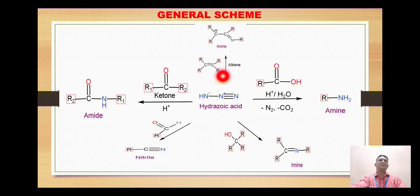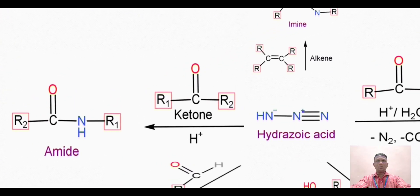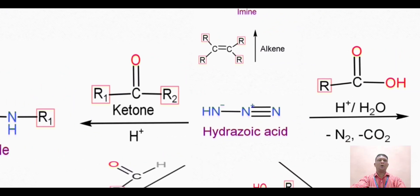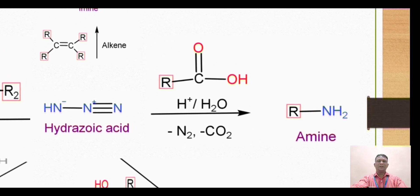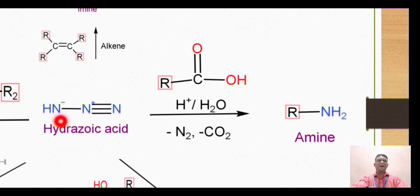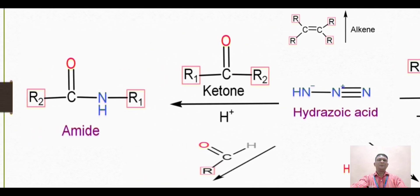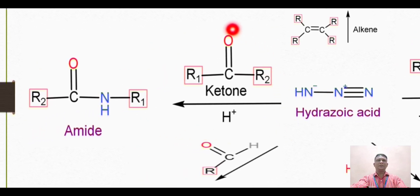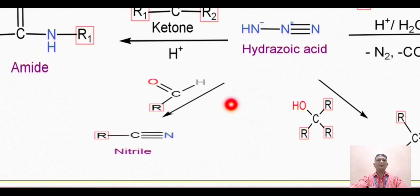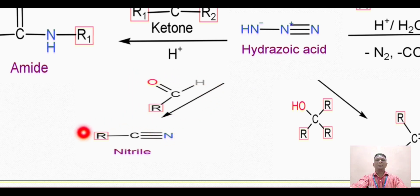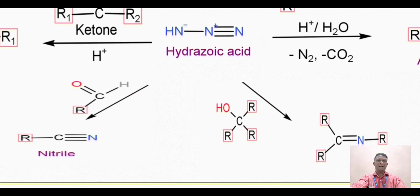Here also we can see that the NH group gets inserted between the doubly bonded carbon and one of the alkyl groups. Looking at the summary: hydrazoic acid on reaction with carboxylic acid gives formation of amine.